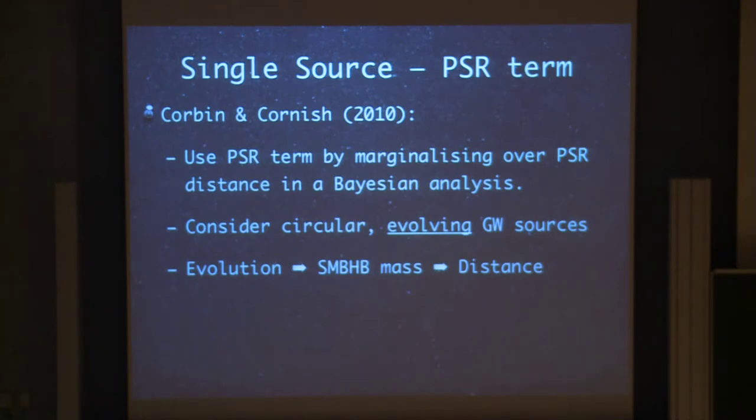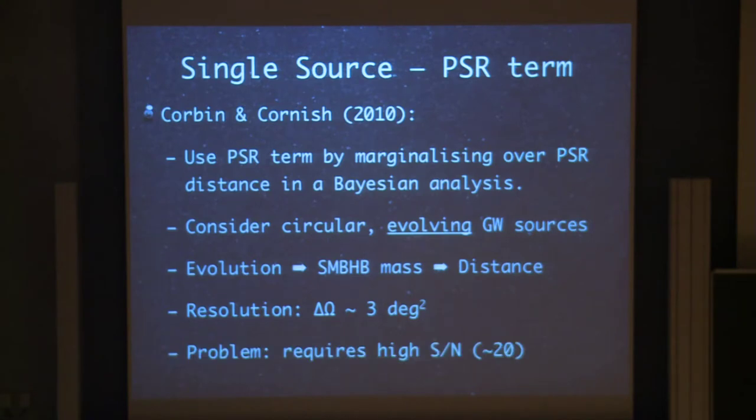Also, because they are using more information than just the Earth term, they can also get the resolution on the sky down by quite a bit. Three square degrees is still not amazing, but it's starting to get interesting. The only problem with their analysis is that they assume a pretty high signal to noise for the gravitational wave detection, and for the foreseeable future, this might be a bit too optimistic. You'll have to wait for the Square Kilometer Array probably to do that.